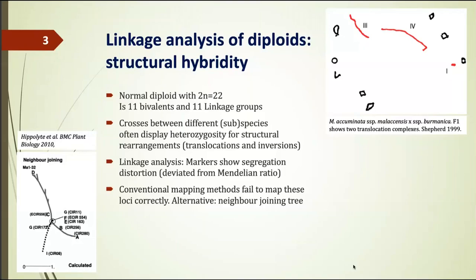Here is the first paper in that respect about Musa that I would like to mention, from Isabel Hippolyte in 2010. She showed that with a different method called the neighbor joining tree, you can beautifully show that at a certain point you have a breakpoint of a translocation. That means you have an association of markers that can go either direction. So conventional mapping methods fail, but alternatives are neighbor joining trees.